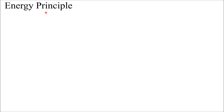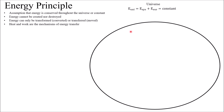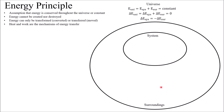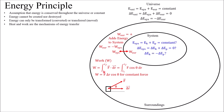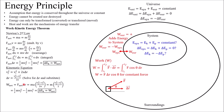The energy principle: the main idea is that the energy in the universe is constant. When we assume that, a lot of cool things can happen. We have a system and surroundings. The energy of the system is not necessarily constant — it could be changing — but if it is changing, it's going to be as a result of the surroundings. We're going to have work, which can be viewed as force times displacement, or we can also integrate. We also have heat, which is another mechanism of adding or subtracting energy from the system.